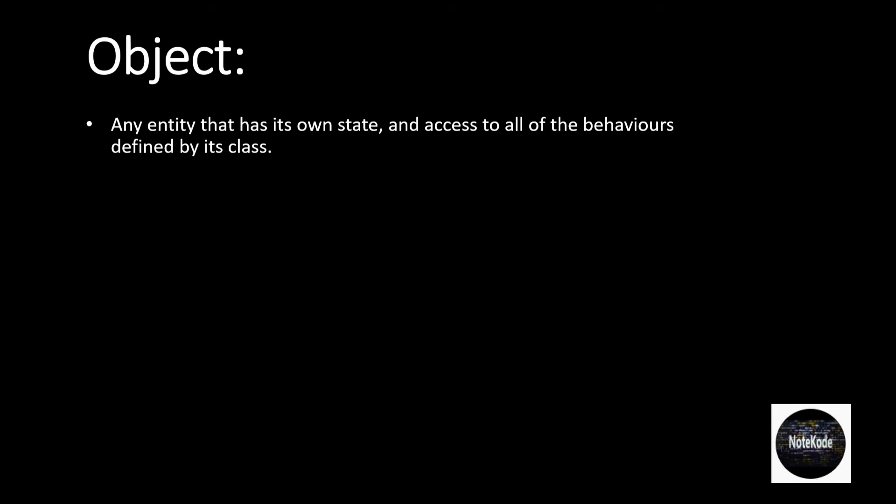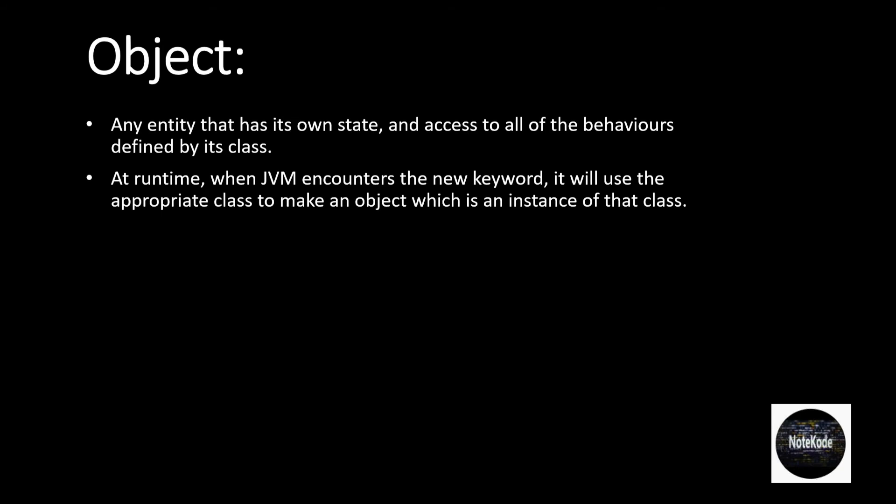Object. What is object in Java? Any entity that has its own state and access to all of the behaviors defined by its class. At runtime, when JVM encounters the new keyword, it will use the appropriate class to make an object, which is an instance of that class. That's why object is also known as instance of the class.